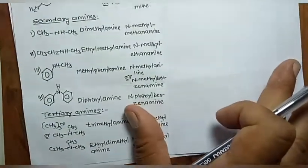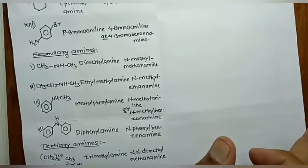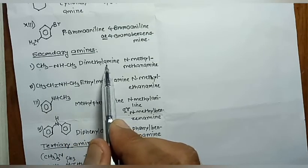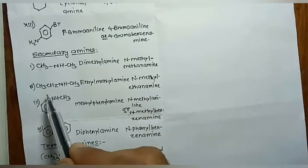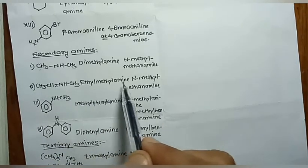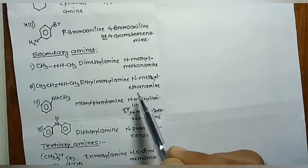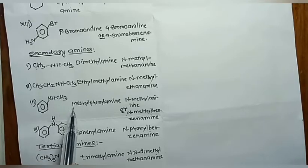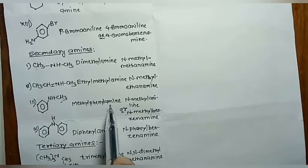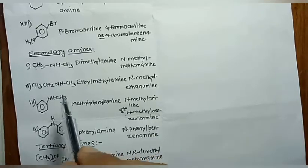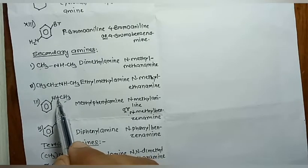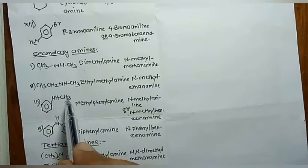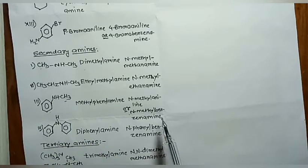For secondary amine examples: CH₃NHCH₃ is 'dimethylamine' (common) and 'N-methylmethanamine' (IUPAC). CH₃NHC₂H₅ is an unsymmetrical secondary amine — common name 'ethylmethylamine', IUPAC name 'N-methylethanamine', since ethyl is the higher group. C₆H₅NHCH₃ has a methyl and a phenyl group — common name 'methylphenylamine' or 'N-methylaniline', IUPAC name 'N-methylbenzenamine'.